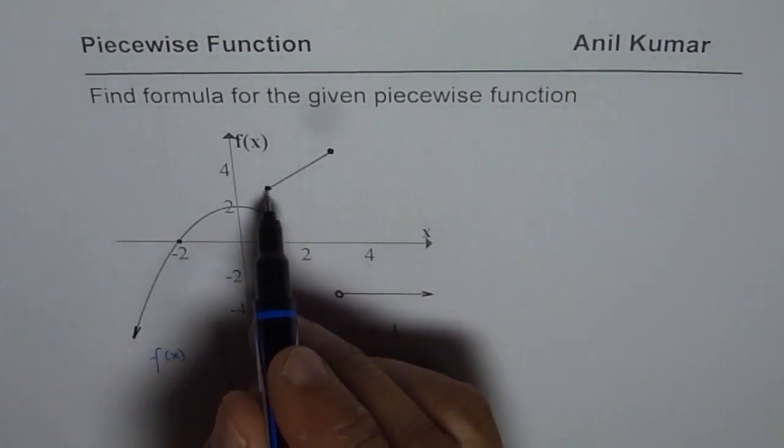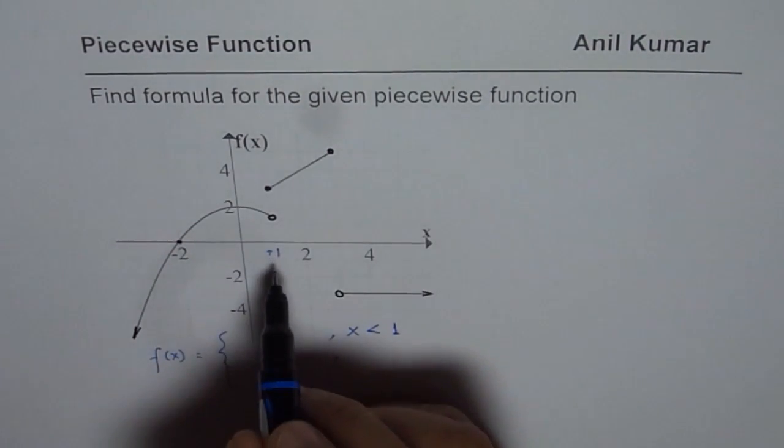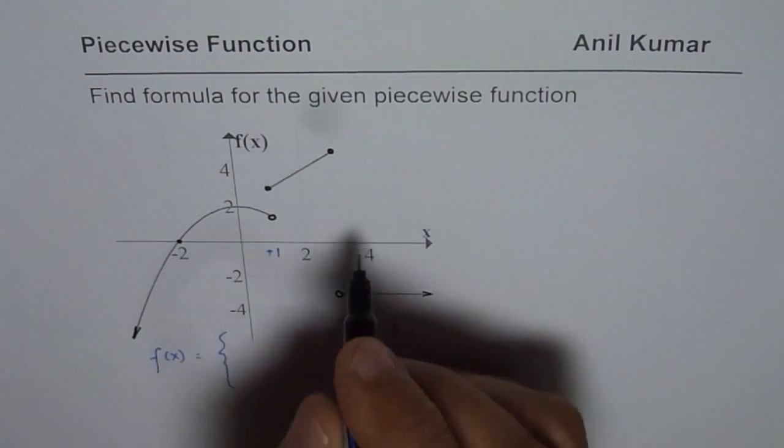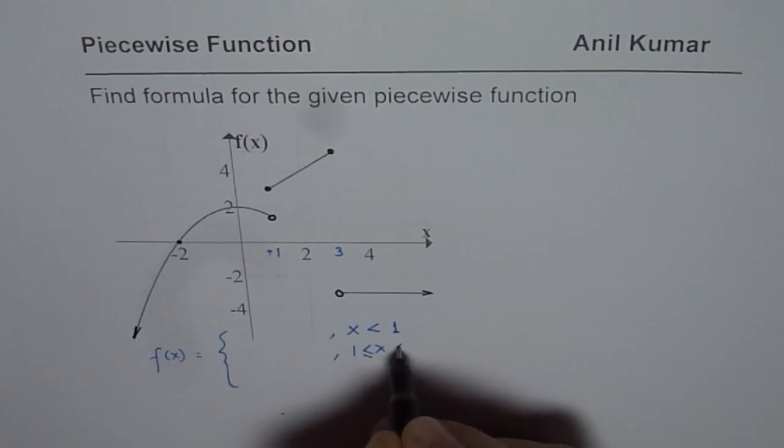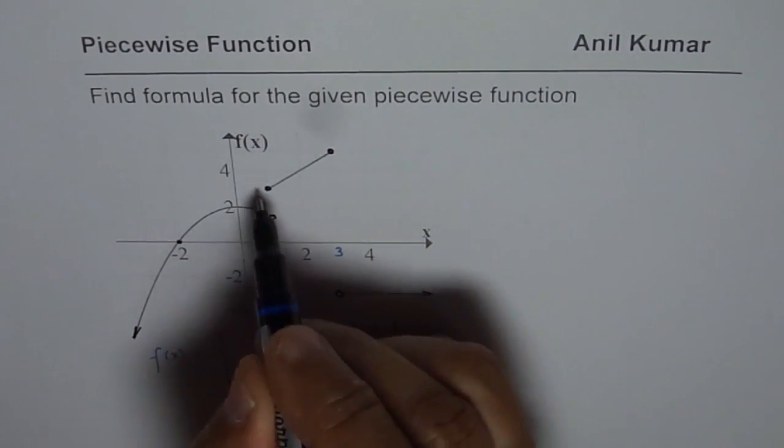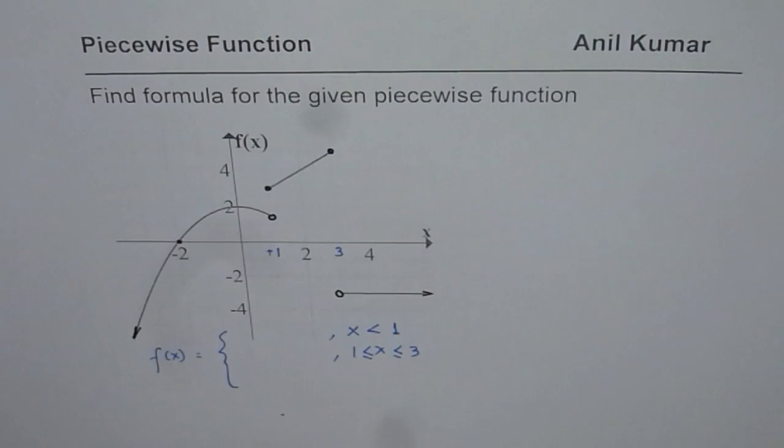The second one is a line segment which is from 1 to 3. So x value is actually greater than or equal to 1 and less than or equal to 3. Since these are filled in circles.